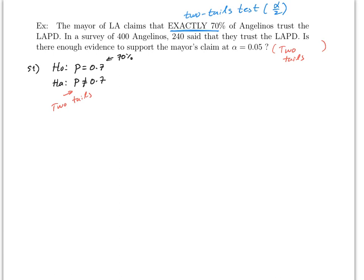Here we also have n is 400 because he has 400 Angelinos and the number of people that say yes to this was 240. So this is the same thing we did in chapter 7.3. So therefore we need to figure out what p-hat is. Well, p-hat is 240 over 400.